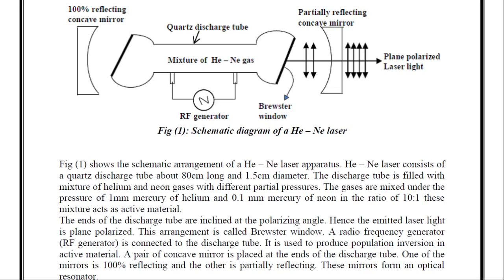In the ratio of 10:1 these mixtures act as active material—that means helium and neon gases are taken in the ratio 10:1. The ends of the discharge tube are inclined at the polarizing angle. Hence, the emitted laser light is plane polarized. This arrangement is called Brewster window.